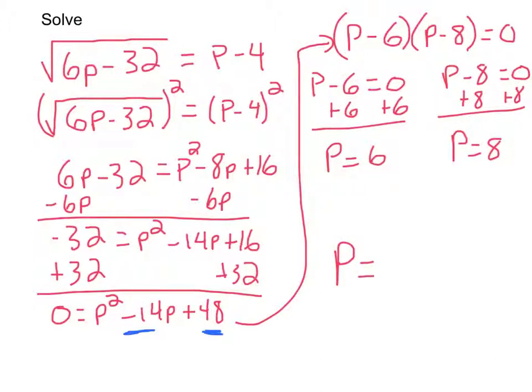So my answer on this one is p is equal to 6 and 8. And you always want to plug these back in to make sure that they're going to work, that you don't have any extraneous solutions. So you can plug in 6 for p and make sure that will work. And then you can plug in 8 for p as well and make sure that will work. But they both work, so you should be good to go on this one.